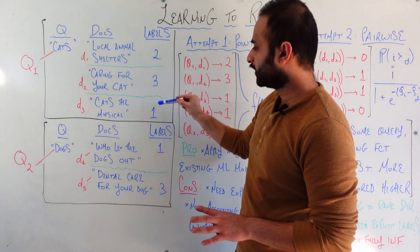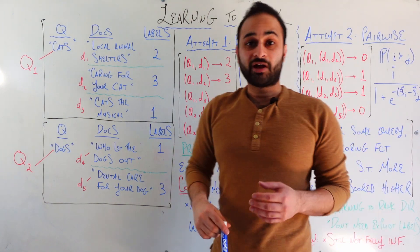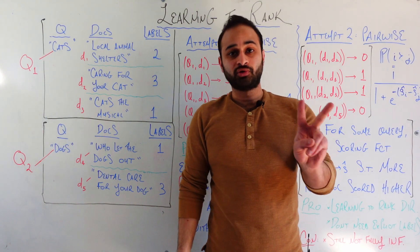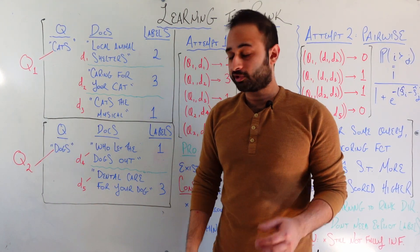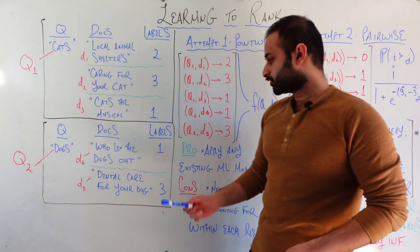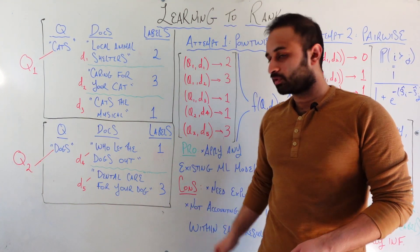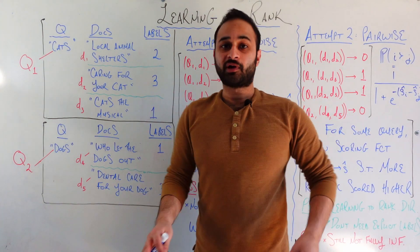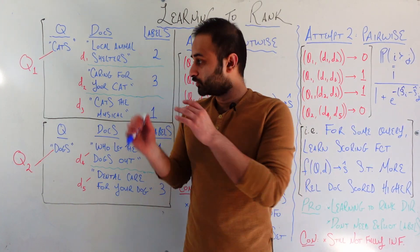We'll just say that we have some kind of labels, and the higher the label, the more relevant this document is to the particular query in question. So we have labels 2, 3, and 1 here. And we have our second query, dogs, called Q2. This one happens to just have two documents: who let the dogs out and dental care for your dog. So this is the raw data for our learning to rank problem.